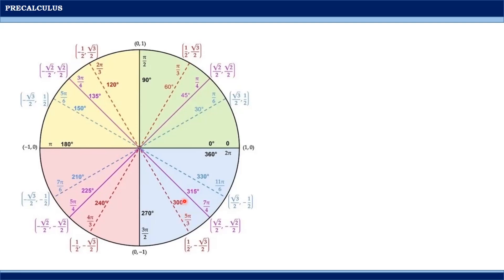For example, the reference angle of 150 degrees, 210 degrees, and 330 degrees is 30 degrees. Hence, they will have the same numerical coordinates. Therefore, it is important to determine the reference angle — which should be one of 30, 45, or 60 degrees — to easily determine the coordinates of the angles.